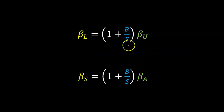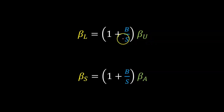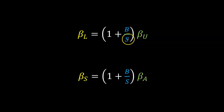At some point in your study of corporate finance, you will come across an equation which looks like this, where it says that a levered beta equals one plus B over S, into a firm's unlevered beta. Beta U stands for unlevered beta, L stands for levered, and B over S stands for the firm's debt to equity ratio in market value terms.